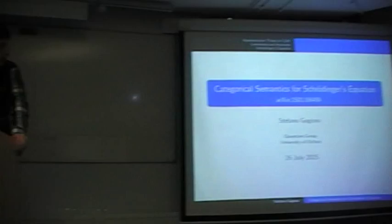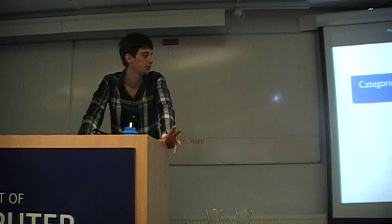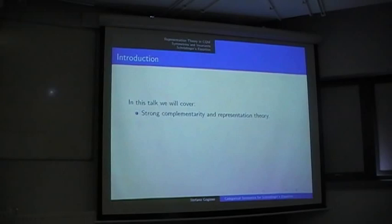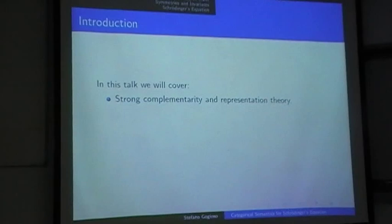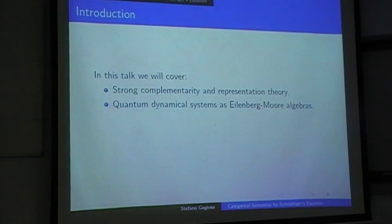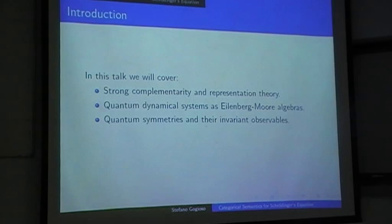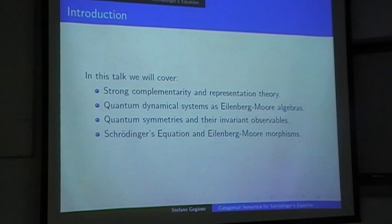In general, diverse semantic model categories, possibly with some notion of superposition, as you'll see during the talk. The outline is: we'll start by reviewing strong complementarity and its ties to representation theory. Then we'll see that quantum dynamical systems can be encoded as EM algebras, and move on to consider them more generally as quantum symmetries. We'll talk about the invariants, and finally Schrödinger's equation as the defining equation of an EM morphism.